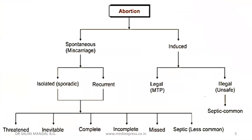Let's see the types of abortion. Abortion is divided into spontaneous abortion and induced abortion. Miscarriage is the terminology we use for spontaneous abortion. Under spontaneous abortion, we have divided into isolated or sporadic, and recurrent.